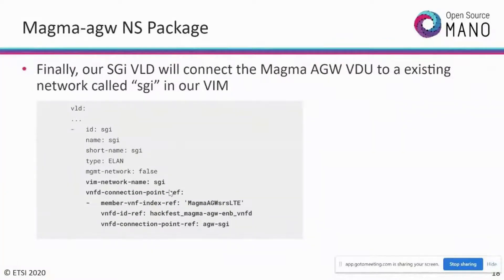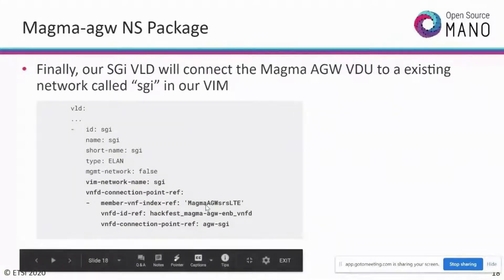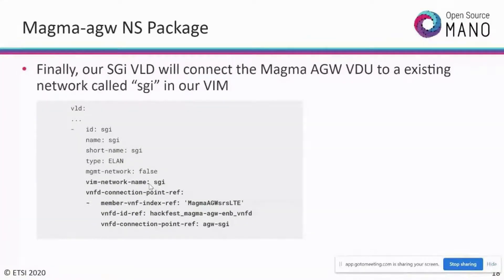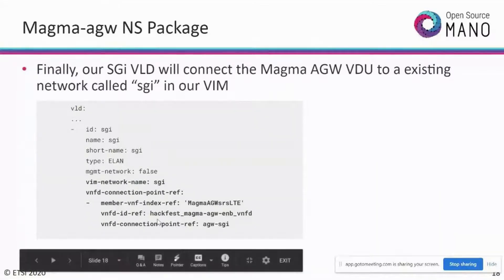Let's look at the Magma access gateway's cloud-init file. In the Magma directory under cloud-init, there's a file named magma-access-gateway-init. When the VM boots up, the underlying VIM ensures these day-zero cloud data are applied to the VDU. In this file, you'll find an orchestration IP placeholder enclosed within curly braces — this is an instantiation parameter that OSM will provide at service launch time.